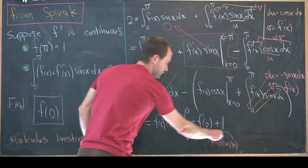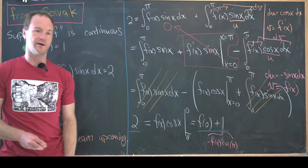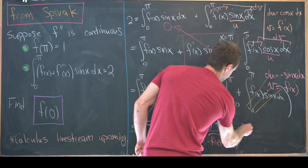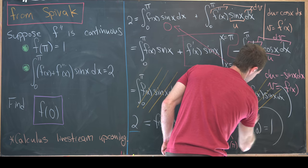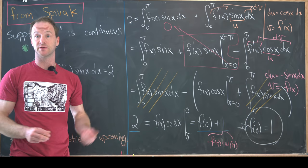We've got two is equal to f(0) plus one, but that pretty quickly tells us that f(0) is equal to one. And that's a good place to stop.